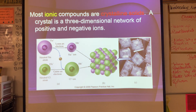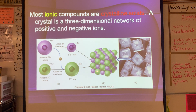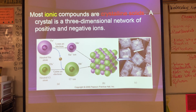Most ionic compounds are crystalline solids — they form crystal networks. A crystal is a three-dimensional network of positive and negative ions. Sodium chloride is a beautiful example: it makes a one-to-one ratio cubic crystal. You probably only recognize sodium chloride as table salt in tiny broken pieces, but if you dissolve it in water and let it evaporate naturally, you get beautiful cubic crystals.